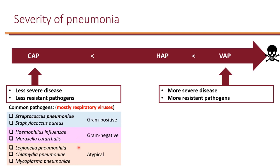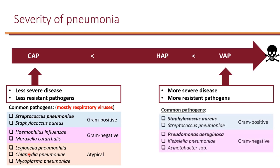And lastly, there are atypical organisms that can cause community-acquired pneumonia, such as Legionella, Chlamydia pneumoniae, and Mycoplasma pneumoniae. When it comes to nosocomial pneumonia, you're more likely to have multidrug-resistant organisms causing HAP and VAP.